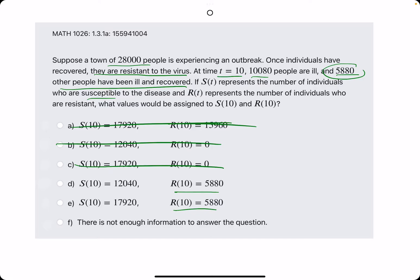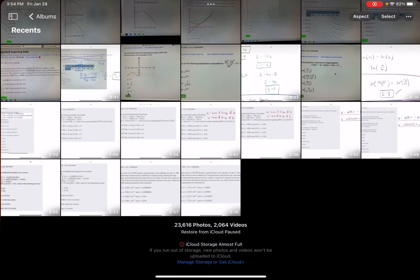Now between D and E, let's calculate the number of susceptible. The number of susceptible should be the total population, the initial 28,000, minus those who recovered, since they are no longer susceptible, as well as the people who are currently ill because they already have it. So we subtract 5,880 and then subtract 10,080 as well. We'll open up Desmos and perform this calculation.